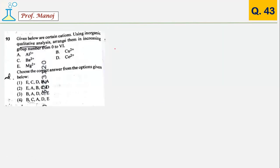Very basic question on identification of groups. Qualitative analysis, practical chemistry has been first time introduced this year. The ions given: copper is from group 2, aluminum is from group 3, cobalt is from group 4, barium is from group 5, and magnesium is from group 6. So this is B, this is A, D, C, and E. The correct answer is number 3.